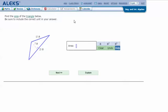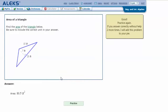In my ALEKS screen, type in the answer that I got in my notes: 80.5 feet squared, and click next. And it says that I got the correct answer. Thanks for watching.